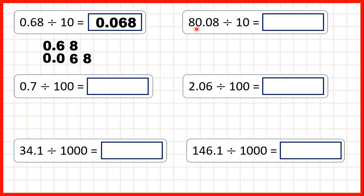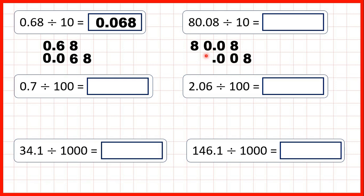Now we have 80.08 divided by 10, so we write the number out and copy down the decimal point. We're dividing, so digits are moving to the right, and dividing by 10 means we move the digits one square. Copying each digit one square to the right gives us our answer: 8.008.